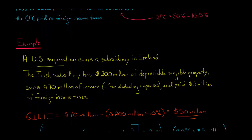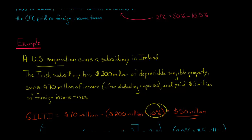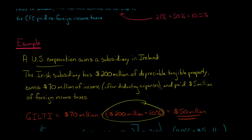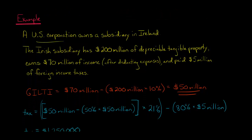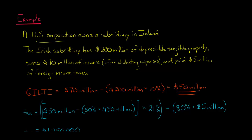First, calculating GILTI: we've got $70 million of income for this foreign entity, but we subtract 10% of the depreciable tangible property — that's $20 million — as the expected return. So we say $20 million of the $70 million has to do with the depreciable tangible property. The remaining $50 million is intangible income, which qualifies as GILTI.